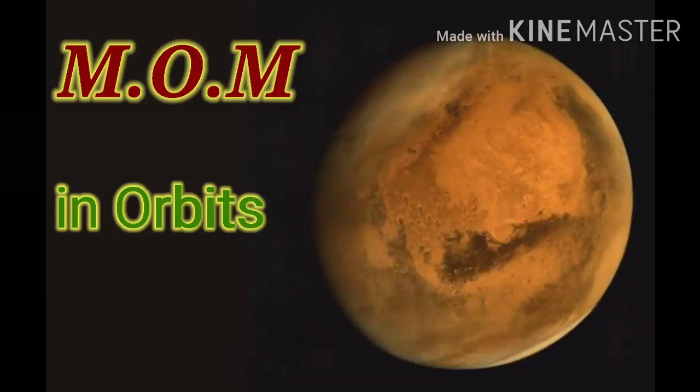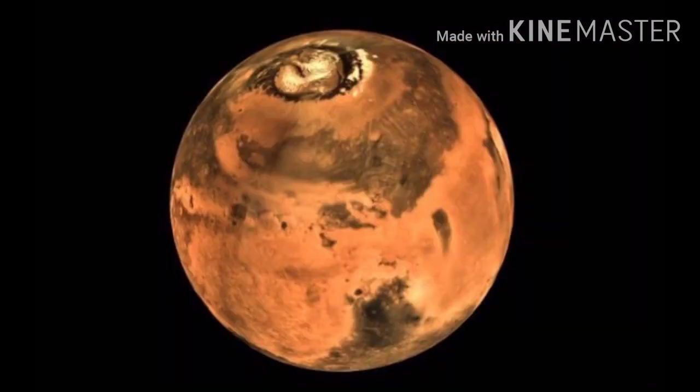Hello everyone, welcome back to my channel. Today we are going to do chapter 8 of the main course book of class 5. The name of the chapter is M.O.M. in Orbit, written by C.G. Salamander and Jemal Jose.